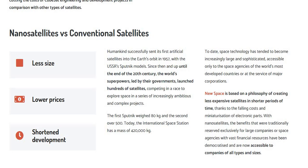What is the difference between nano-satellites versus conventional satellites? Less size, lower prices, and short-term development. Humankind successfully set its first artificial satellite into Earth's orbit in 1957 with the USSR's Sputnik models.